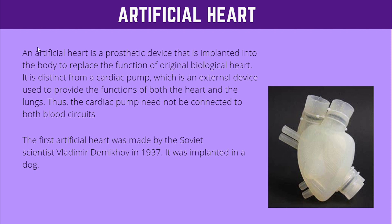The first artificial heart was made by Soviet scientist Vladimir Demikov in 1937 and was implanted in a dog. A cardiac pump is actually a device connected to the body from the outside to purify blood for patients with heart problems. The artificial heart replaced the functionality of that cardiac pump by being directly inserted into the body, so the patient does not need to carry any external machine to stay alive.